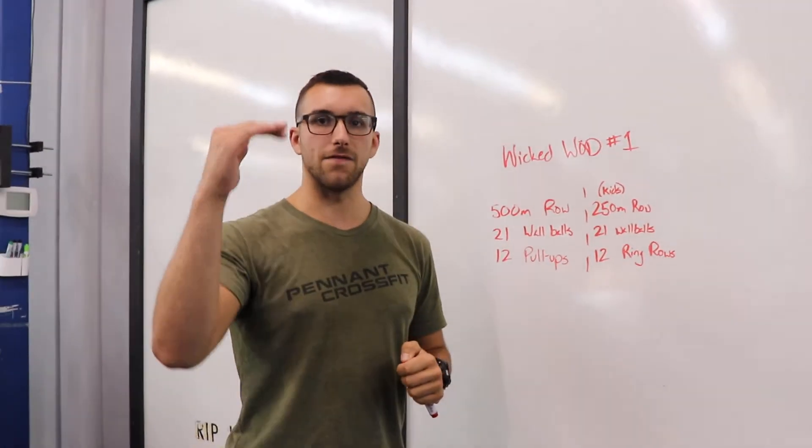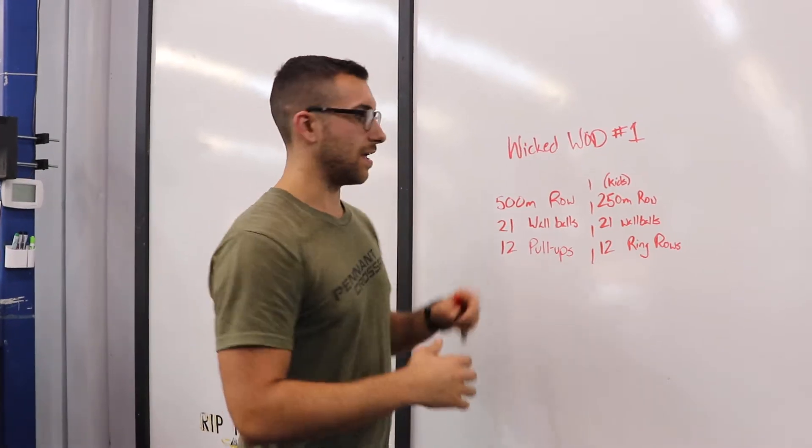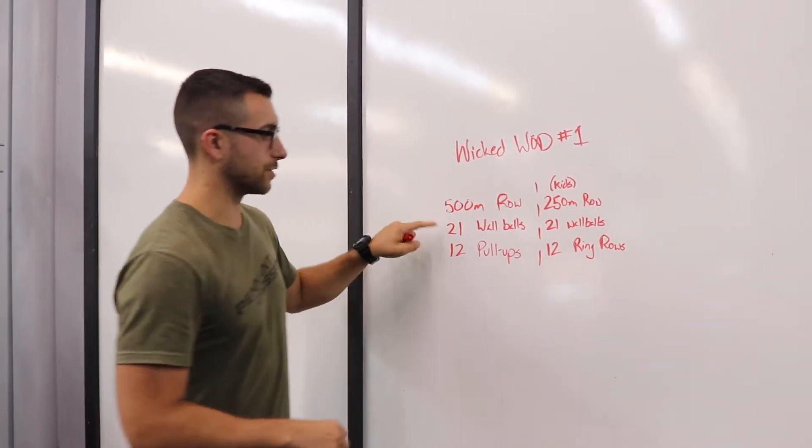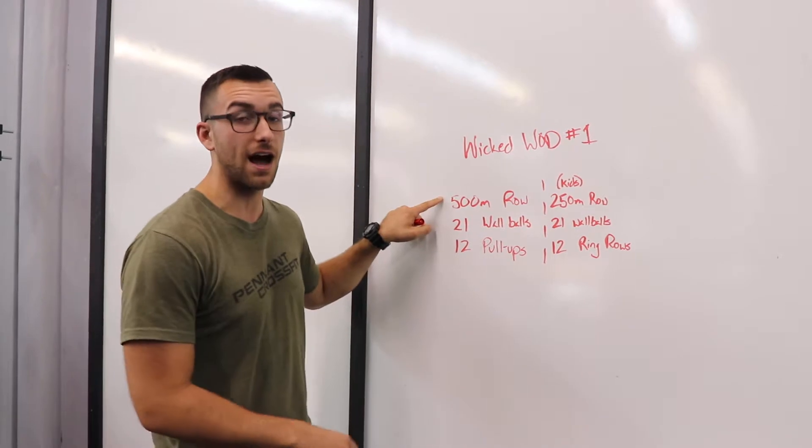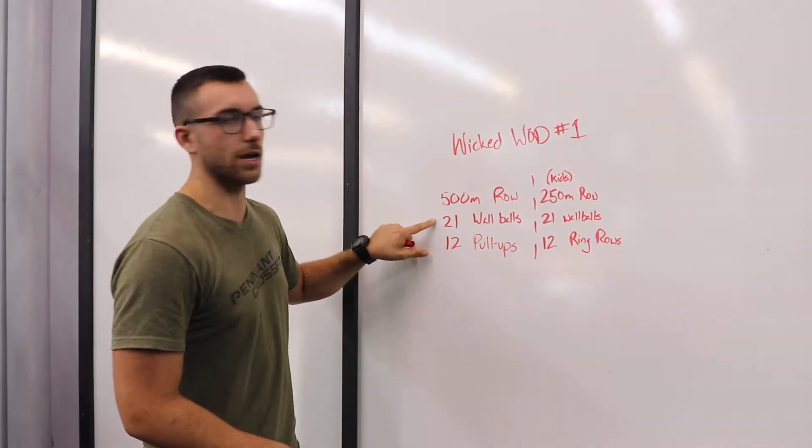So the pace is dependent on the first partner. If the first partner gets the 12 pull-ups before they get off their row, that's fine. Once you get off your row, you're straight onto the wall balls.